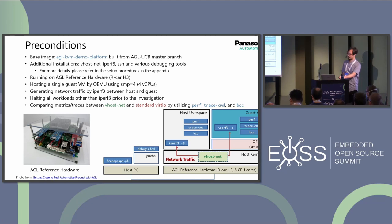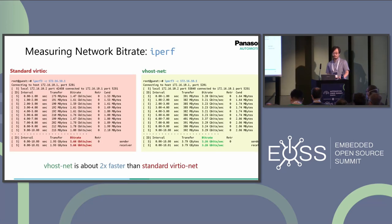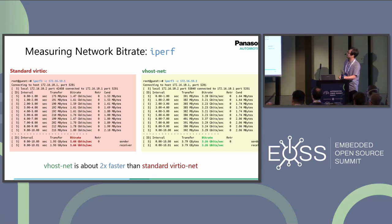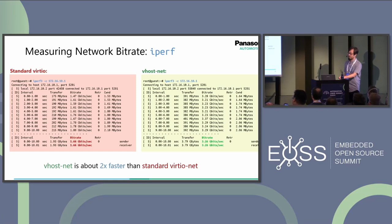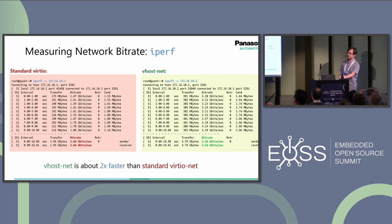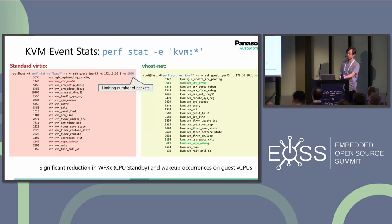I will be comparing the metrics and traces between VHOST-net and the standard virtio-net — in other words, with and without VHOST-net support — by utilizing tools such as Perf, TraceCommand, and BCC. Let's begin with the simple bit rate measurement using iPerf3. With standard virtio-net, the bit rate was 1.66 gigabits per second, while with VHOST-net it reaches 3.26 gigabits per second. This shows that VHOST-net is about two times faster than the standard virtio-net, clearly highlighting the benefits of using VHOST-net.